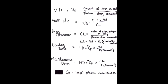What is the equation of volume of distribution? The equation for volume of distribution is VD equals amount of drug in the body over plasma drug concentration.